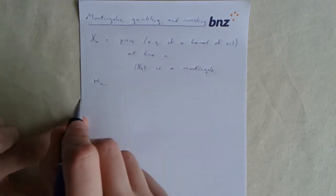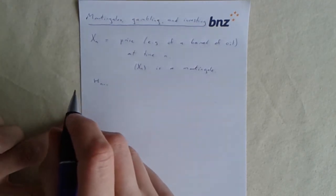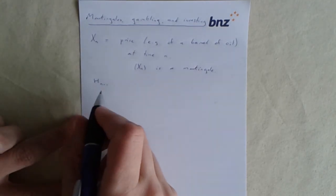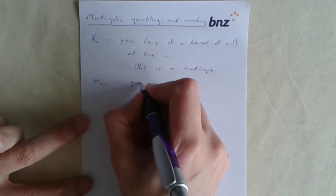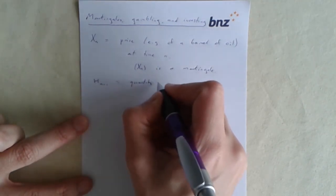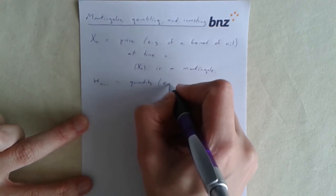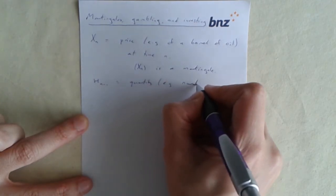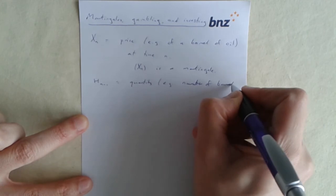And the process xn will be assumed to be a Martingale quite often. Why is that a reasonable thing to assume? That's a question that we'll be getting into a little bit later, but for now let's just make the assumption.